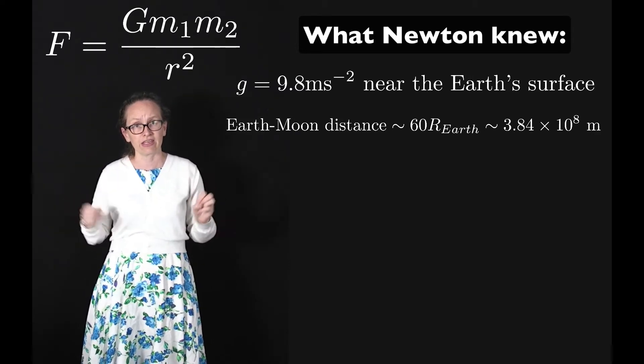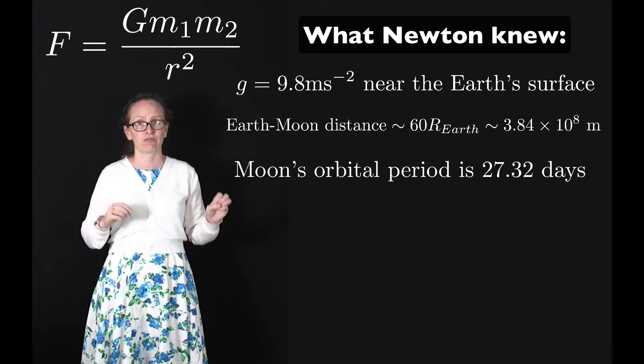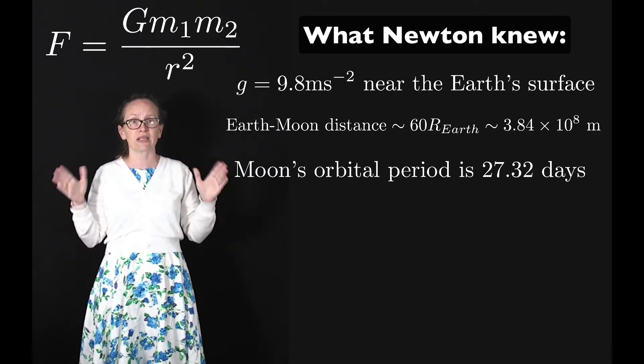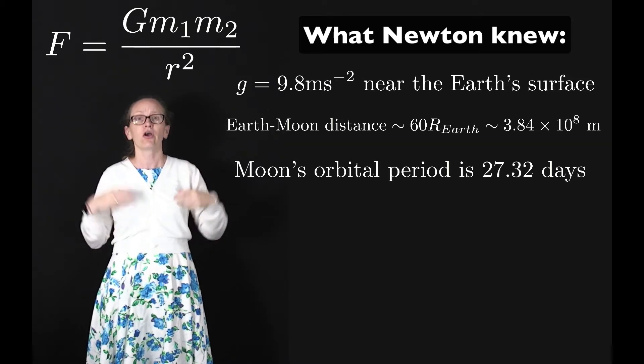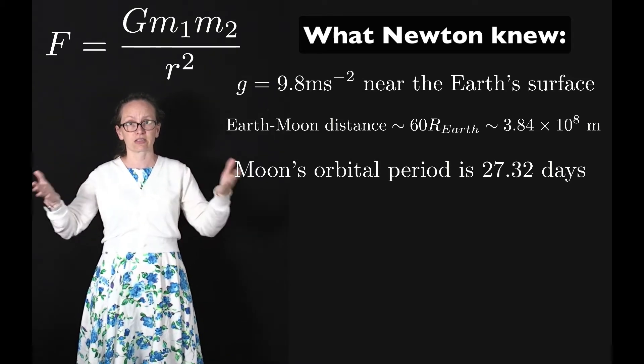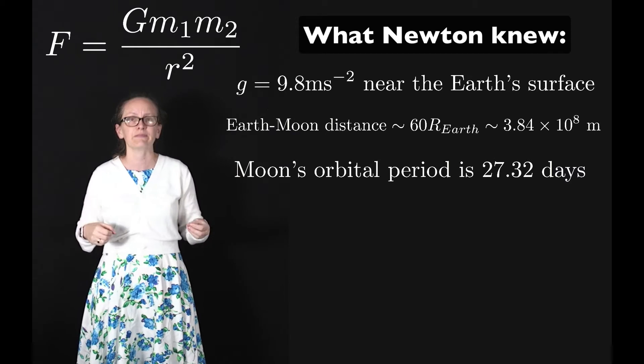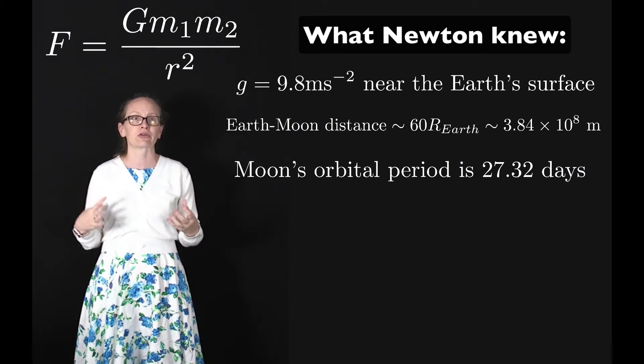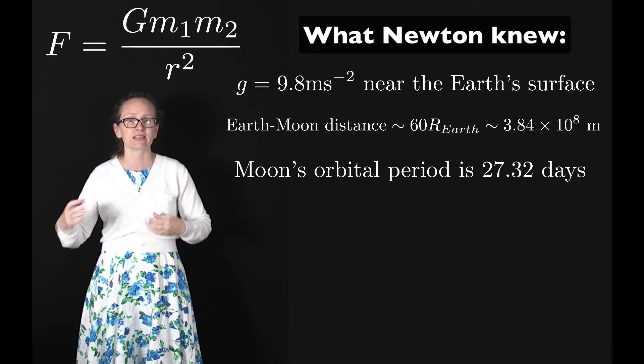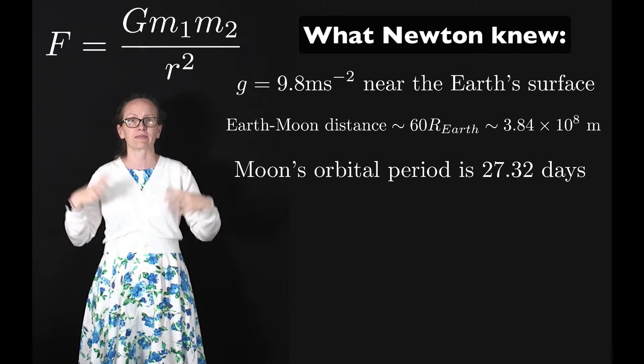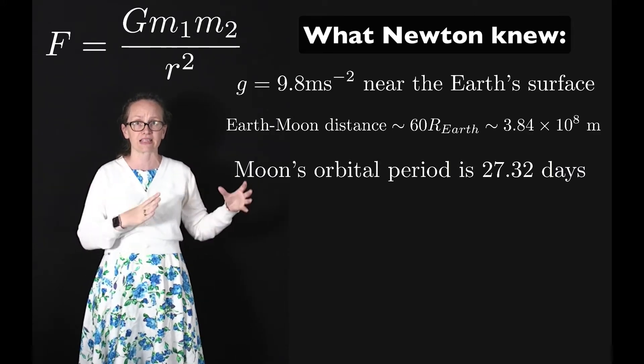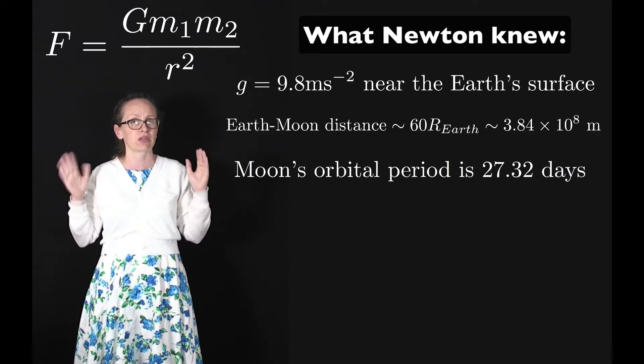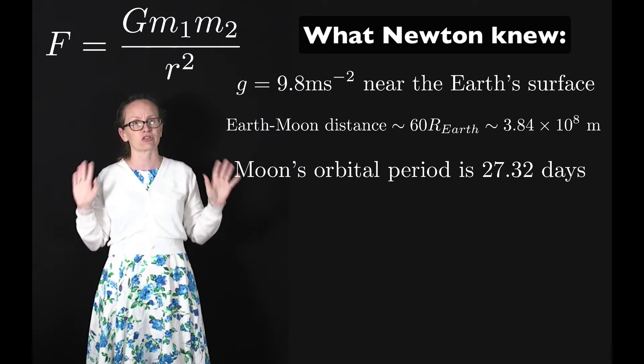The other thing he knew was the orbital period of the Moon. He knew that the Moon took 27.32 days to orbit the Earth. We could make this measurement today as well quite easily. He also knew the orbital periods for some of the planets, which didn't help him come up with the theory but helped him test it. Once he'd worked out what was going on with the Moon, he could then use the planets to test it.